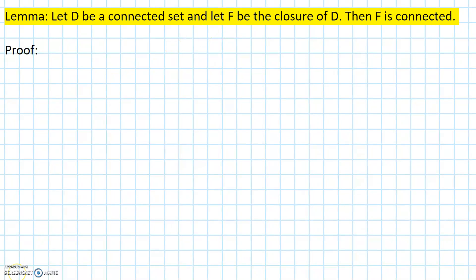So let's prove it. We are going to do a proof by contradiction. We are going to assume that the closure F can be written as a union of two non-empty closed subsets. Let's call them C1 and C2.